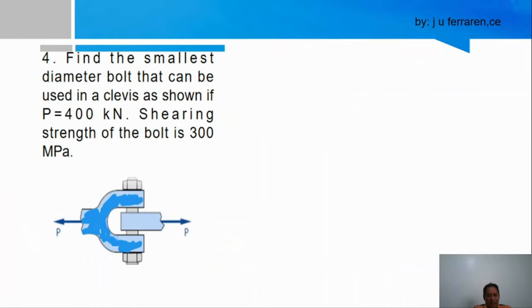So that's the complete solution for the first. Now this last problem: Find the smallest diameter bolt that can be used in a clevis as shown. The load P is equal to 400 kN. Shearing strength of the bolt is 300 MPa. This is the bolt. So the load is there. We need to find the diameter of this bolt. How to solve that? When you're going to apply the force, the bolt will actually resist this load. The section of the bolt will prevent sliding.